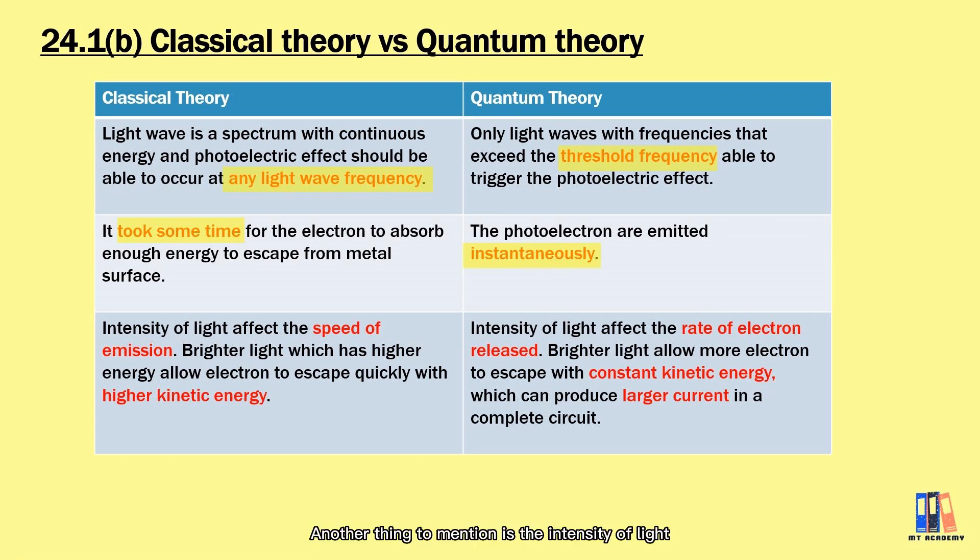Another thing to mention is the intensity of light. Classical theory says that light intensity will affect the speed of emission. Brighter light has higher energy which allows the electron to escape in a shorter period of time with higher kinetic energy. However, the reality is that the intensity of light only affects the rate of electron released. It allows more electron to escape which gives higher value of current since current is the rate of flow of charge. About the kinetic energy, we'll look at the formula which shows it depends on the light frequency.